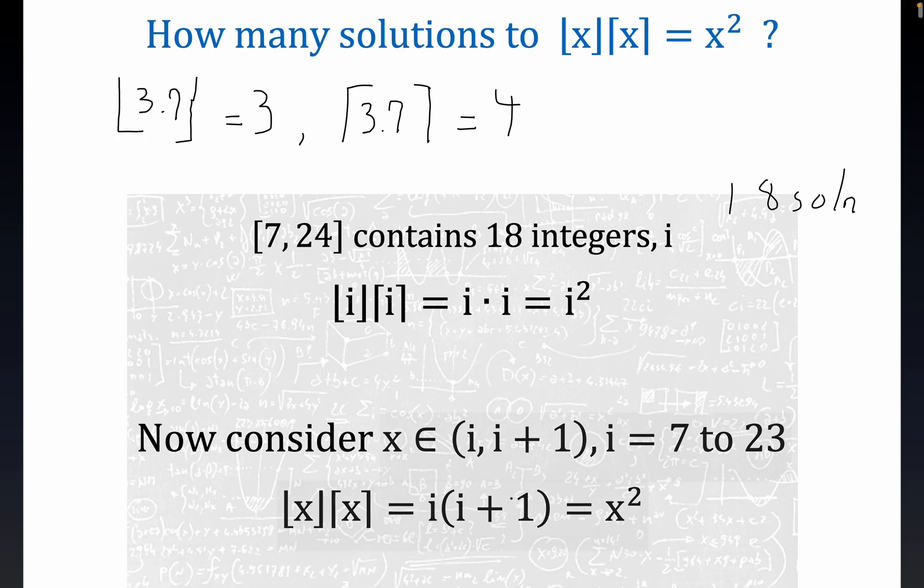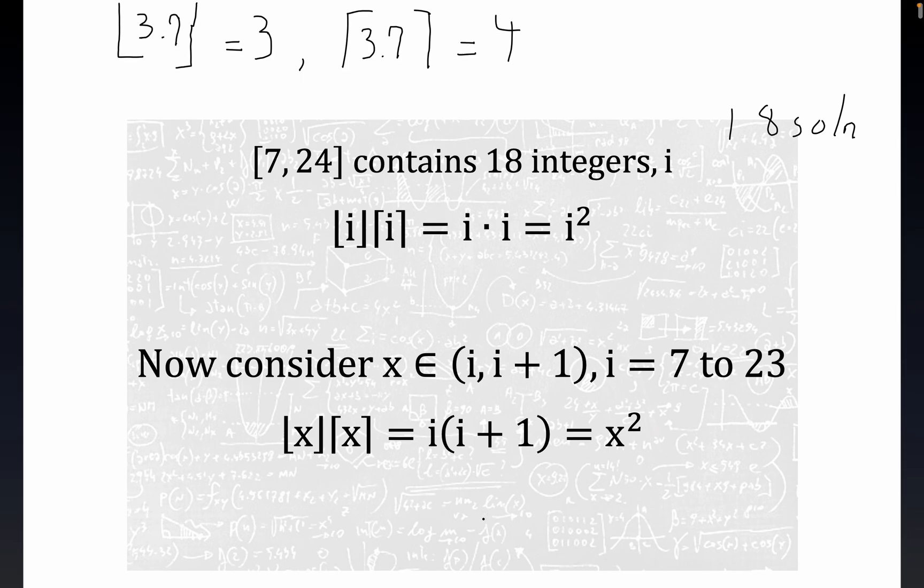It's clear that the floor of any real number in this interval is greater than i but less than i plus 1, so that means its floor would be i. And in a similar fashion, its ceiling would be i plus 1.